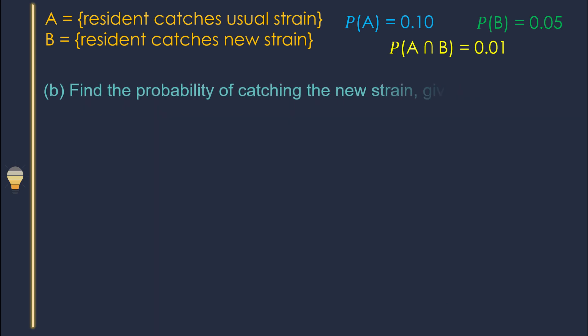Now go to Part B. This is also a conditional probability. What is the condition here? At least one strain is caught. That means maybe only the usual strain, or maybe only the new strain — that is what 'at least one' means. We can also consider both. In notation, we write this as A union B.